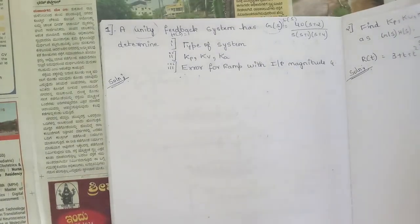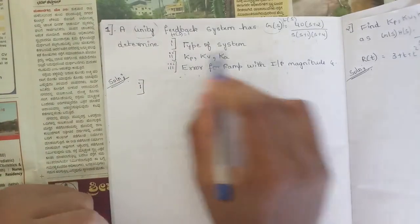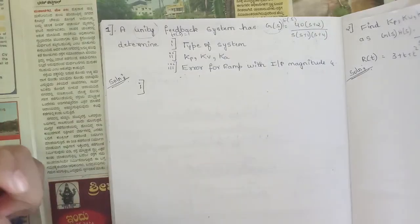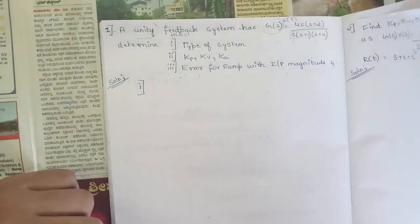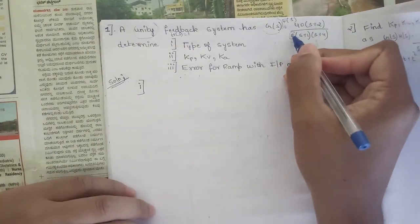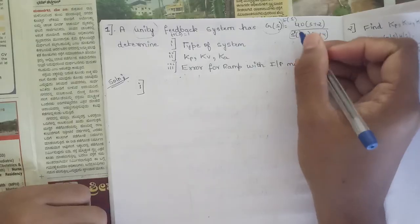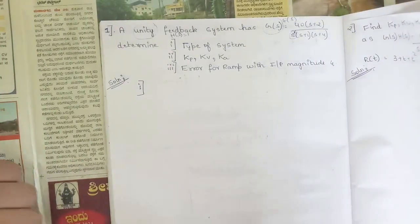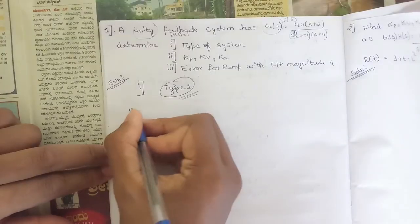To find the type of system, we look at the power of s in the denominator's first term. Since we have only s to the power 1 in the denominator, the value of j equals 1, and we can say this is a Type 1 system.